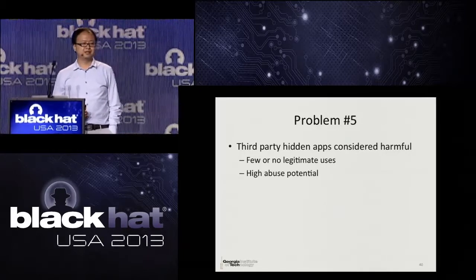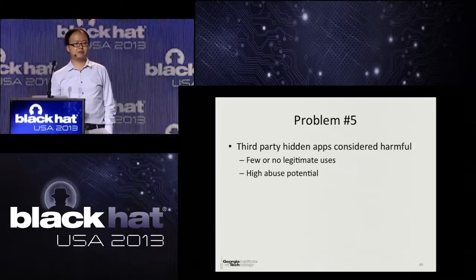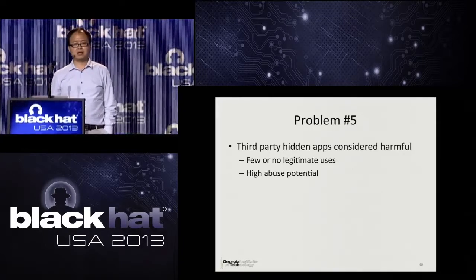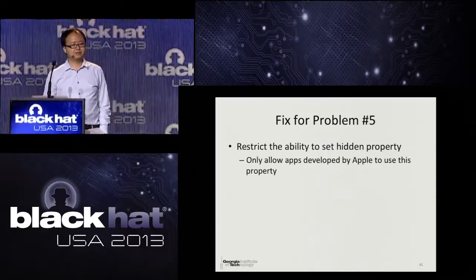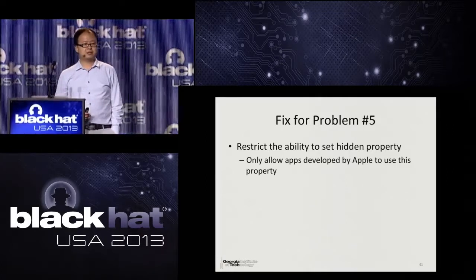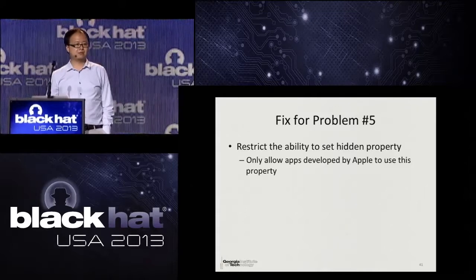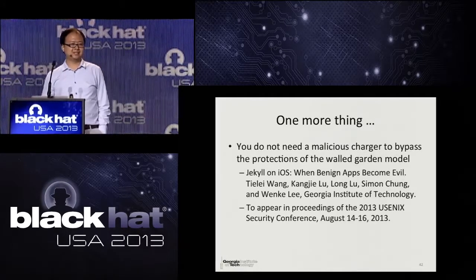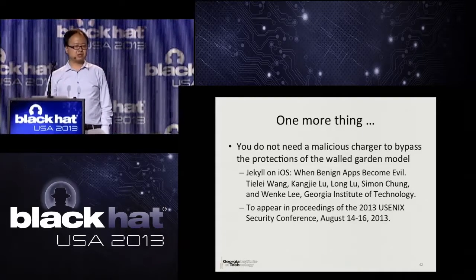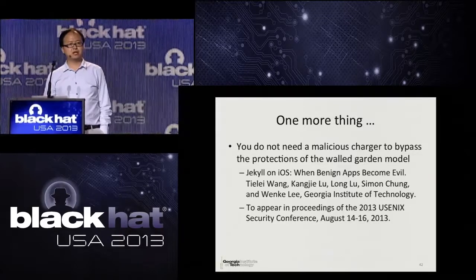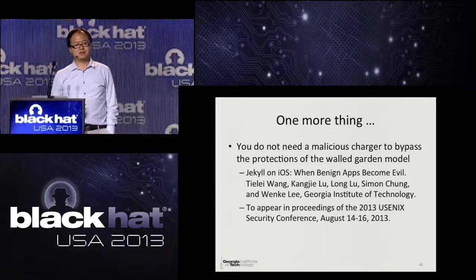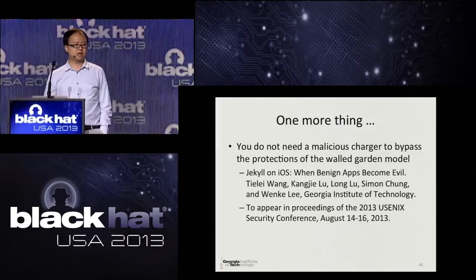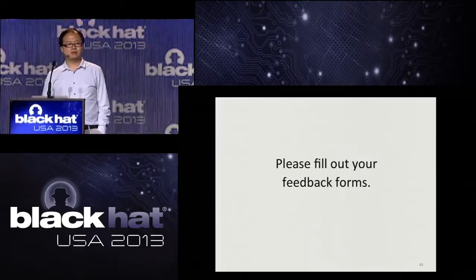Problem number five: the hidden app property. During our research, we found this property is only used by a few of Apple's own apps or carrier apps, so there is little or no legitimate use for third-party apps — but it has very high abuse potential. The fix is easy: Apple can make this an entitlement and restrict it to Apple's own apps, similar to how Apple restricts the code generation entitlement to mobile Safari only. Before ending, one more thing: in this talk, we have demonstrated how we can leverage the USB protocol and a personal developer account to inject malware into any device. However, this is not the only way. At the upcoming USENIX Security conference, our colleague will present how a malicious app can bypass the app review process and get distributed through the official App Store. Thank you. Please fill out your feedback form.